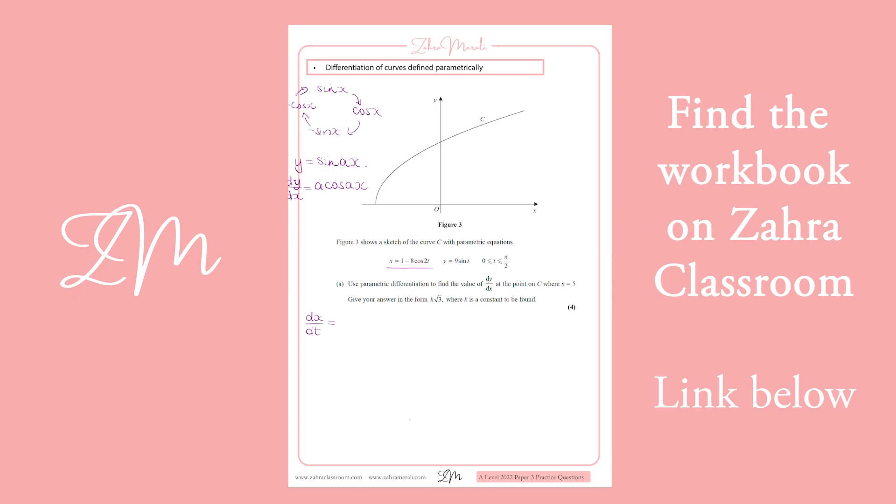So dx dt is going to give me 16 sine 2t. And dy dt is just going to give me 9 cos t. And if I want dy dx, I have to do dy dt multiplied by dt dx, which is the sine 2t flipped over. So essentially I put the one with the y on the top and the one with the x on the bottom.